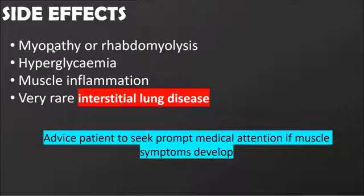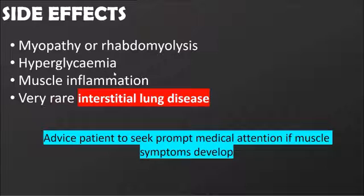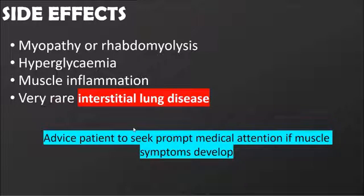Statins have side effects including muscle diseases. Rare but serious side effects include myopathy or rhabdomyolysis — a breakdown of muscle fibers which can sometimes be fatal. They can also cause diabetes or hyperglycemia, muscle inflammation with pain, tenderness and weakness, and interstitial lung disease. If a patient presents with cough or dyspnea, interstitial lung disease should be suspected. Any muscular symptoms — pain, tenderness, or weakness — require medical attention.